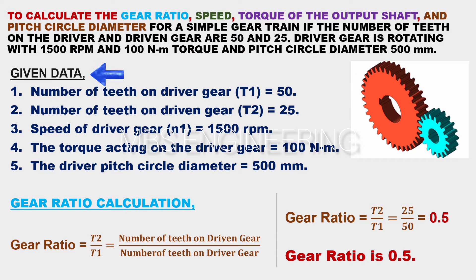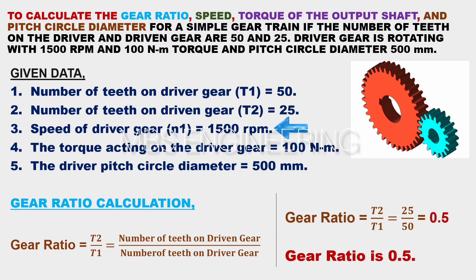Given data: number of teeth on driver gear, T1 = 50; number of teeth on driven gear, T2 = 25; speed of driver gear, N1 = 1500 RPM; torque acting on the driver gear = 100 Nm; driver pitch circle diameter = 500 mm.